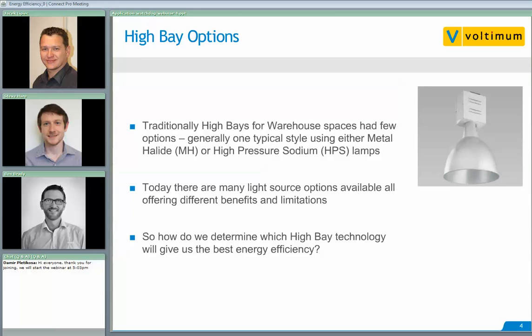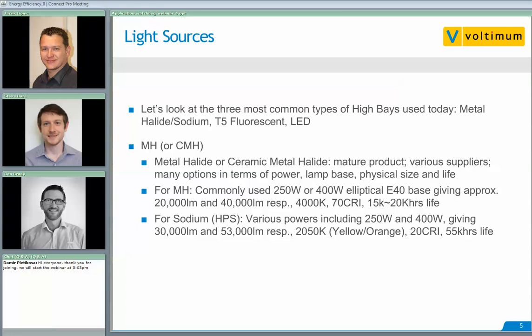How do we determine the high bay technology that will give us the best energy efficiency? Let's look at the three most common types used in high bays today: metal halide or sodium, T5 fluorescent, and LED. With regards to metal halide, or ceramic metal halide, it's quite a mature product with various suppliers who've been around in the industry for a very long time. There are many options in terms of power, lamp base, physical size, and lifetime. For metal halide, we commonly use 250-watt or 400-watt elliptical E40 base lamps.